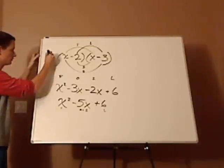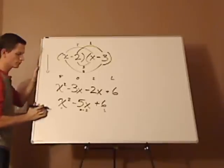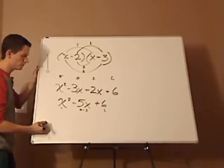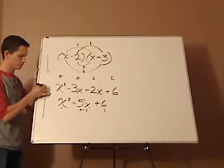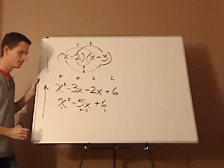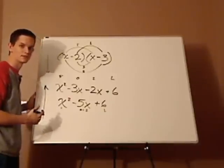When you factor this, you're actually going backwards. When you foil, you're going this way. And then when you factor, you're going back up. They're opposites of each other.